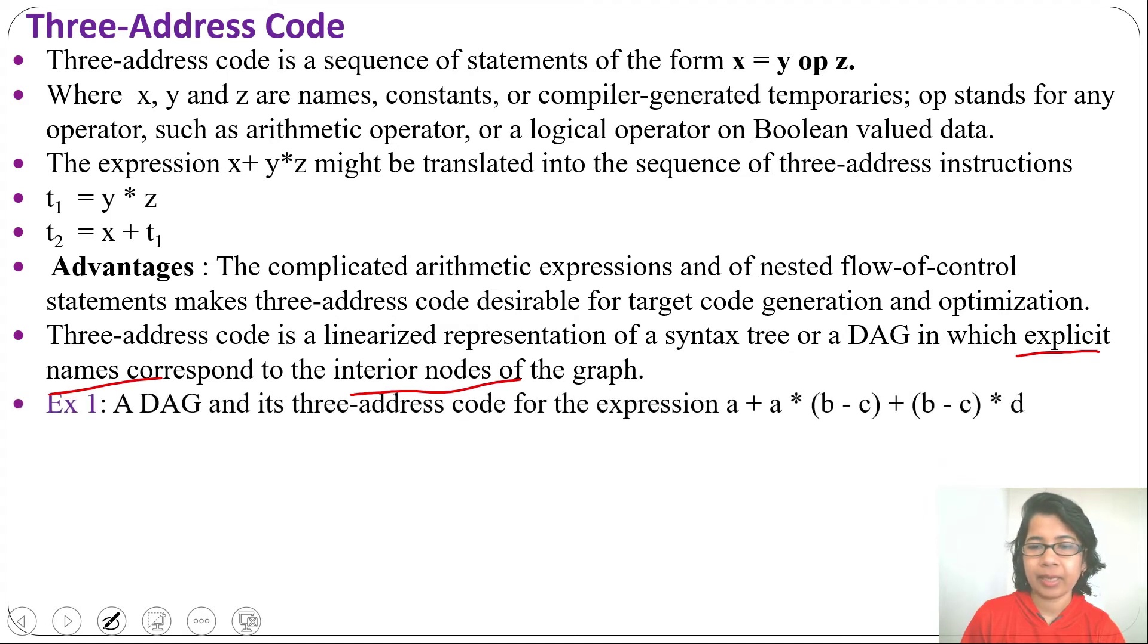Let's see one example: A + A * (B - C) + (B - C) * D. I already discussed how to design DAG for this. Just go through that lecture. Here I am just using a screenshot of DAG. So first we should evaluate B - C. I will write three-address instruction for B - C first: B - C = T1. Let me assign T1 for minus.